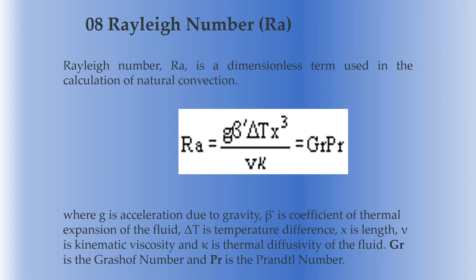Assalamualaikum, greetings. Welcome to my YouTube channel. Continuing from the last video, here is the eighth dimensionless number: the Rayleigh number. The Rayleigh number is a dimensionless number which is used to calculate natural convection. Mathematically, the Rayleigh number is equal to the product of the Grashof number and the Prandtl number.